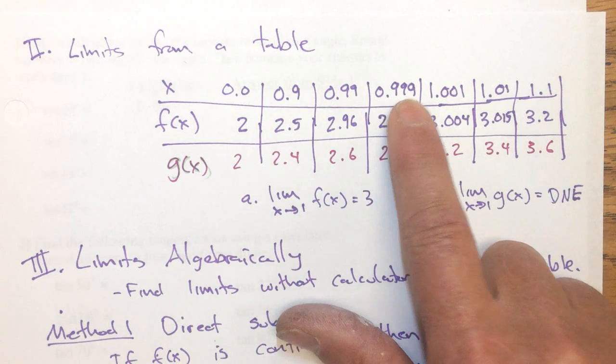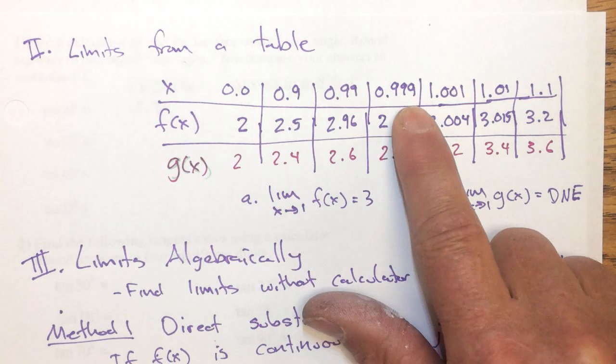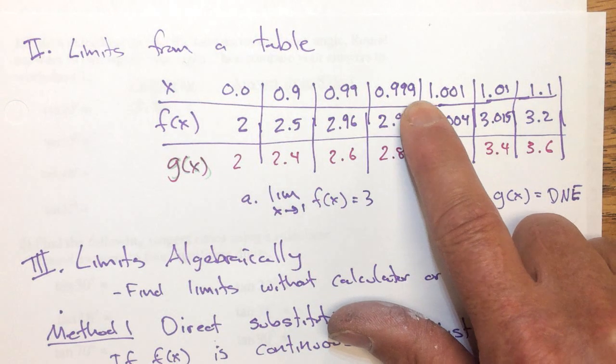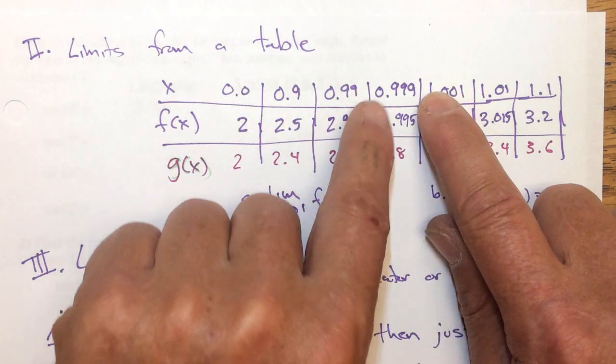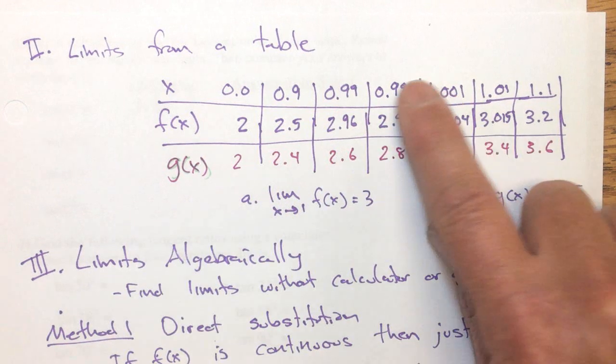But they're getting exponentially closer. They're gaining decimal places of accuracy, getting very close to one. And then on the other side, it's also getting close to one. You have to make sure there's no gap in there. So as x approaches one...